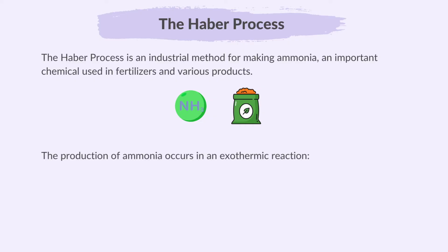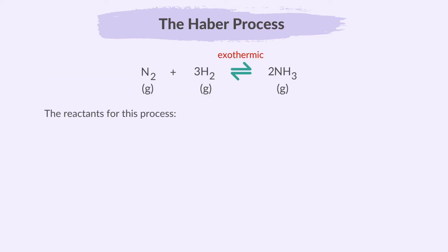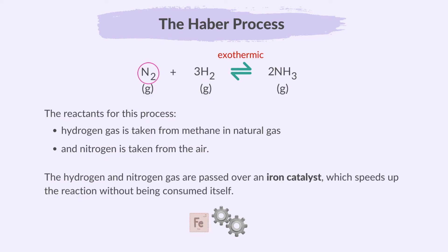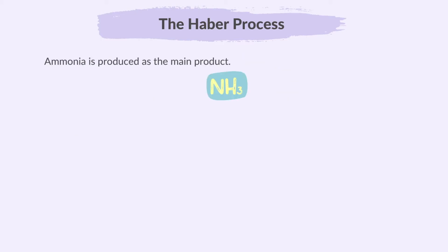The production of ammonia occurs in an exothermic reaction. Here's the balanced equation — as you may notice, this is a reversible reaction. The reactants for this process: hydrogen gas is taken from methane in natural gas, and nitrogen is taken from the air. The hydrogen and nitrogen gas are passed over an iron catalyst, which speeds up the reaction without being consumed itself. Ammonia is produced as the main product.